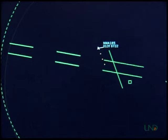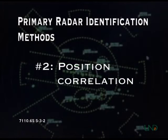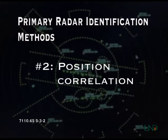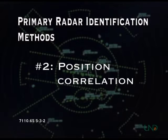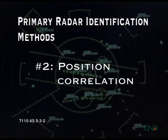Northwest 185, Academy departure, radar contact. The second method is called position correlation. This method involves the pilot reporting his or her position relative to a fixed or visual reporting point, and the controller observing the target at that location in a heading that is consistent with the pilot's reported intentions.